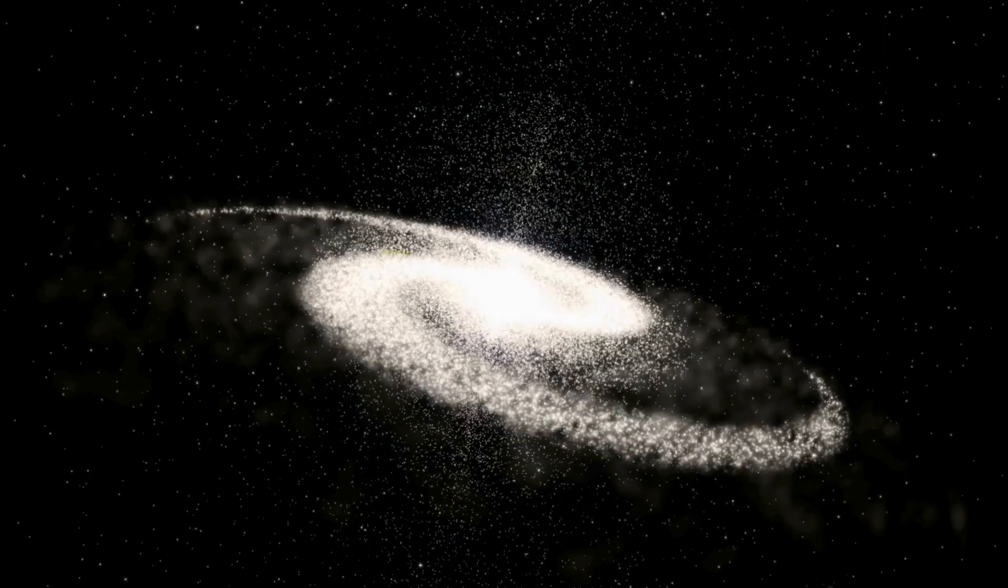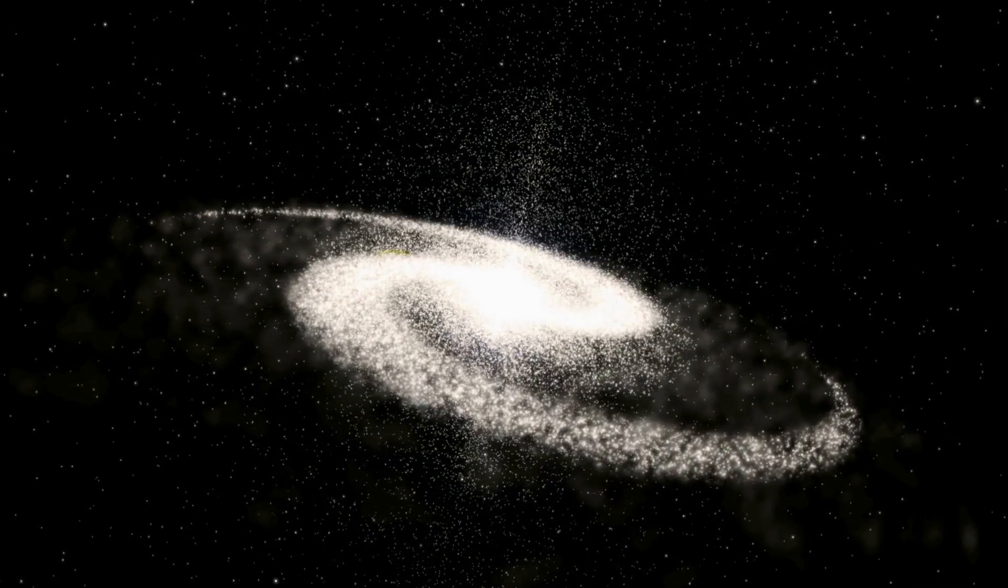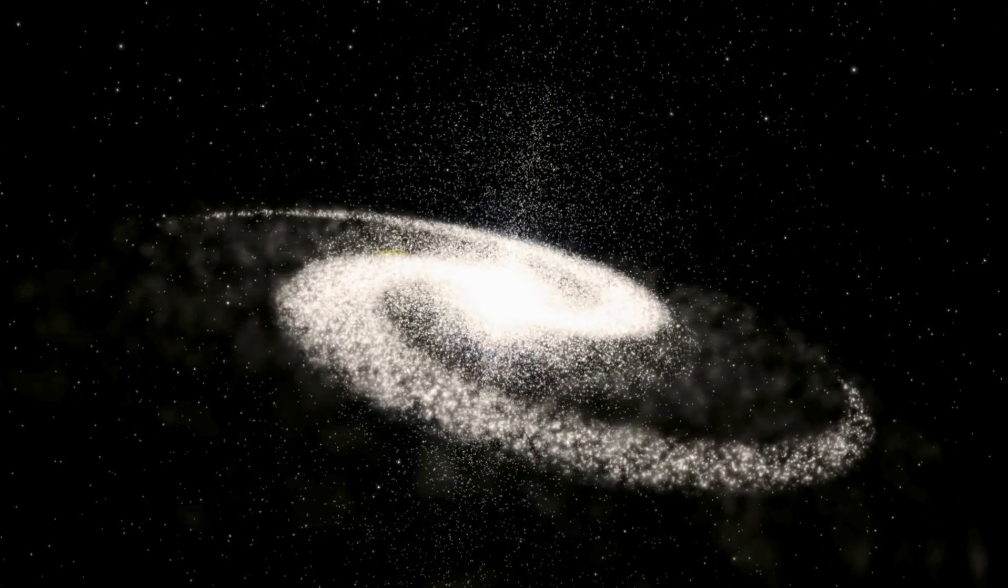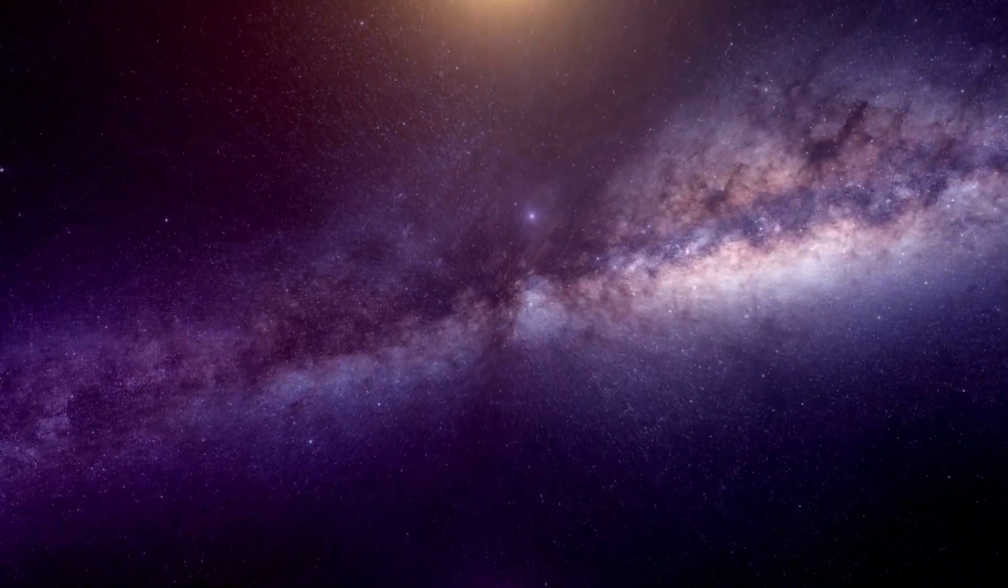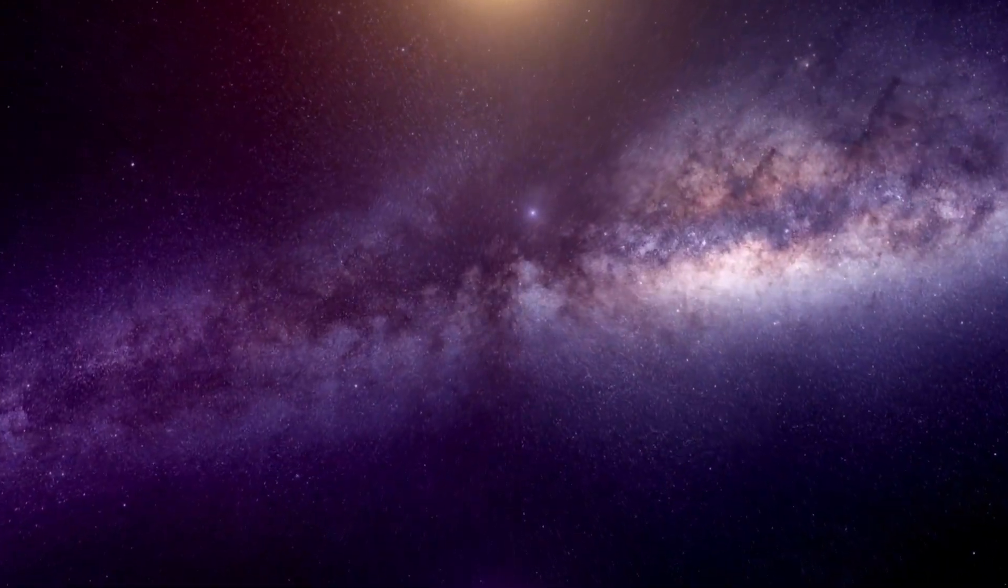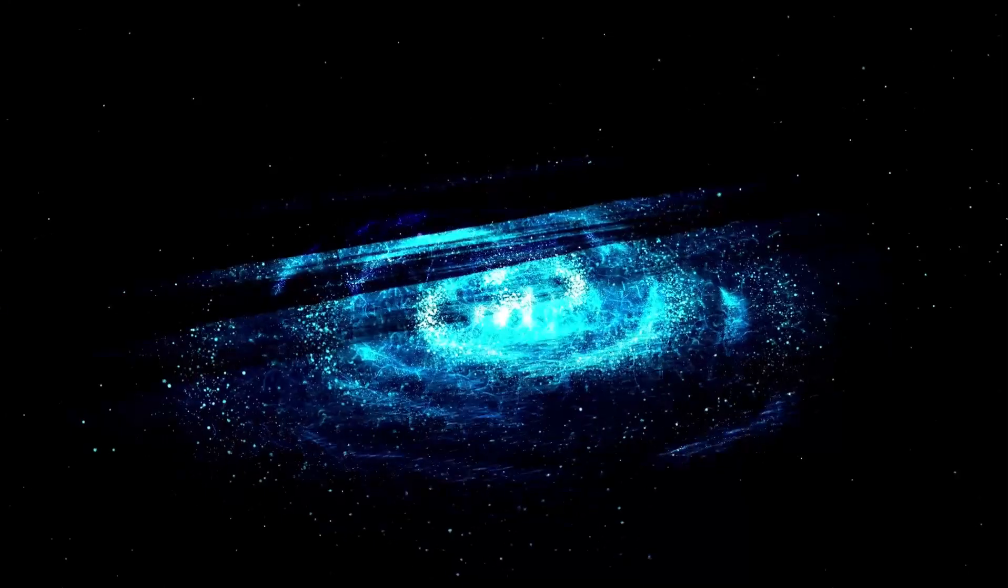The tiny particles clumped together to form atoms, which in turn clumped together to form the stars and galaxies we see today. These early stars produced larger atoms and atomic clumps, and new stars were born. Galaxies collided and merged together, creating an incredible cosmic spectacle.